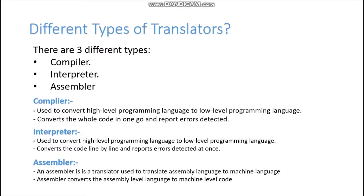Now let's talk about the Assembler. The assembler deals with machine-level language — it is a low-level language. Nowadays we use Python and Java, so I will target compiler and interpreter. But if you have any interest in learning about assembler, please mention it in the comment box and I will make a separate video. Just understand at a superficial level that assembler is a low-level language and maintaining it is really tough.